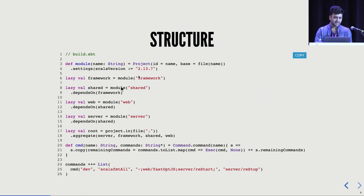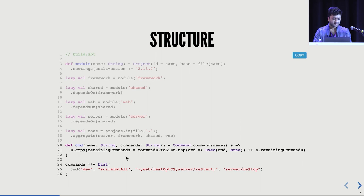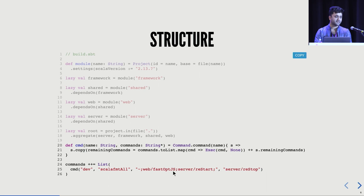This is the build.sbt. You can see I'm defining four different sub-modules for the project. One useful thing I like to do is register a command — in this case a dev command that formats my code. The tilde is the watch operator, like live reload. So when I change my code, it live reloads the back-end and the front-end. It does fast optimization JS, which takes your Scala JS code, compiles it to JavaScript, and starts the server.